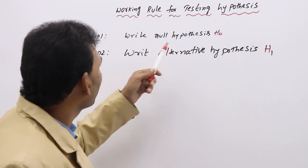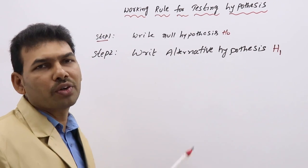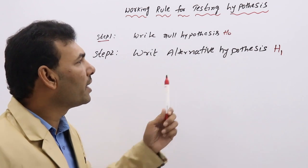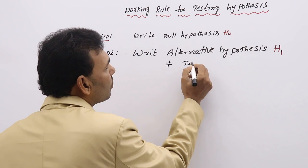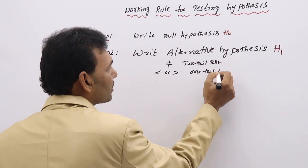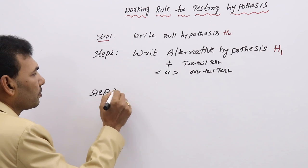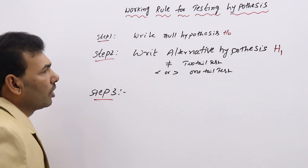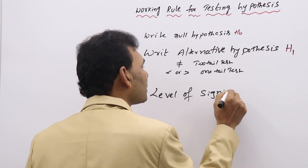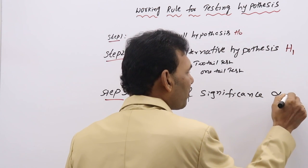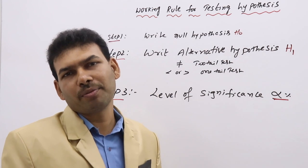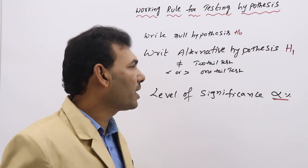This H1 decides whether we are doing a one-tail test or two-tail test. In H1, if you have not equal to type, that is a two-tail test. If you have less than or greater than type, that is a one-tail test. Step 3 is to write the critical region — level of significance — that is alpha percentage, generally 5%, 2%, 1%, or 10%. This is the rejection percentage: how much percentage you may reject the hypothesis.